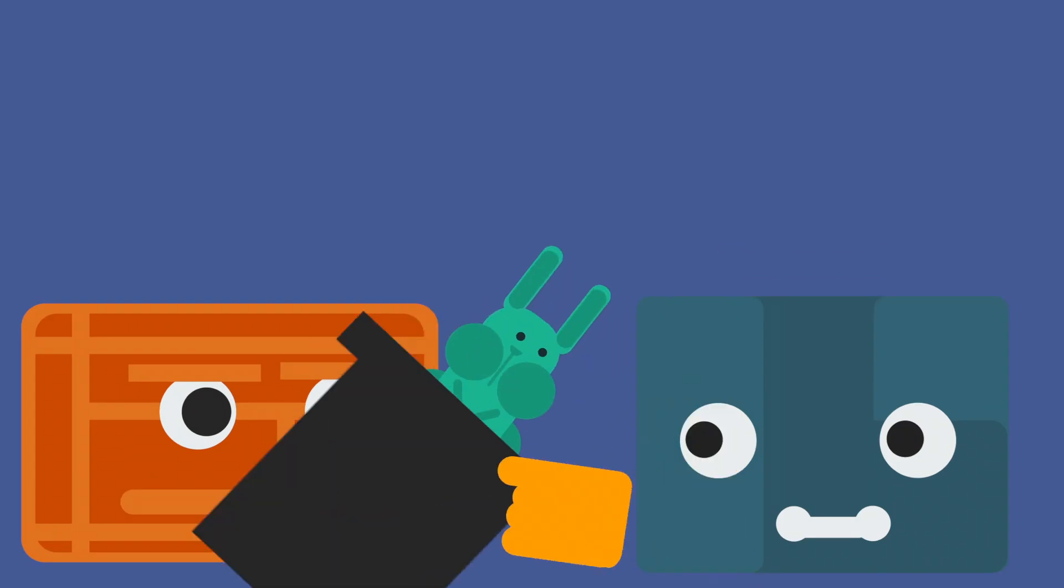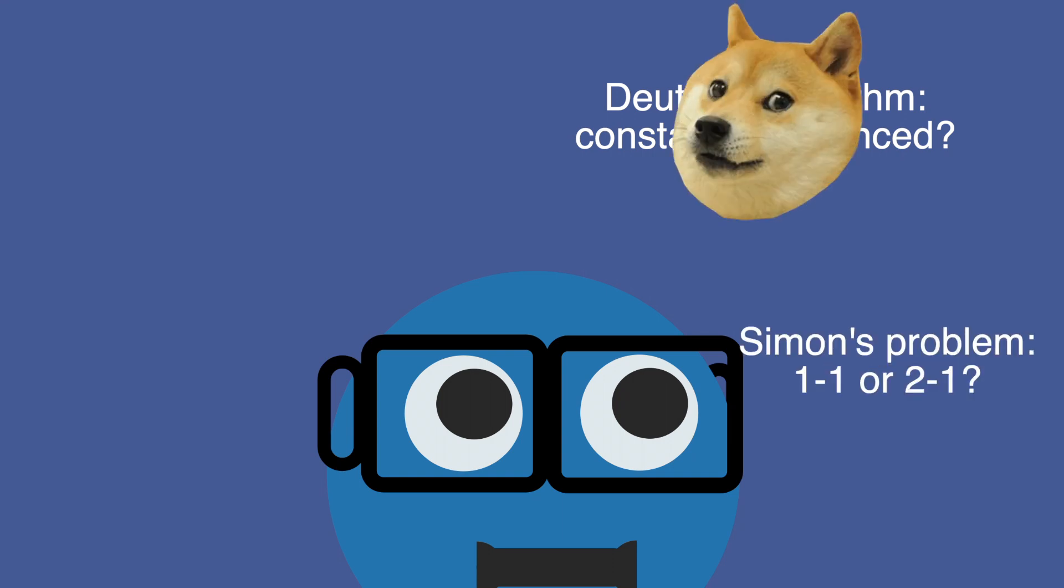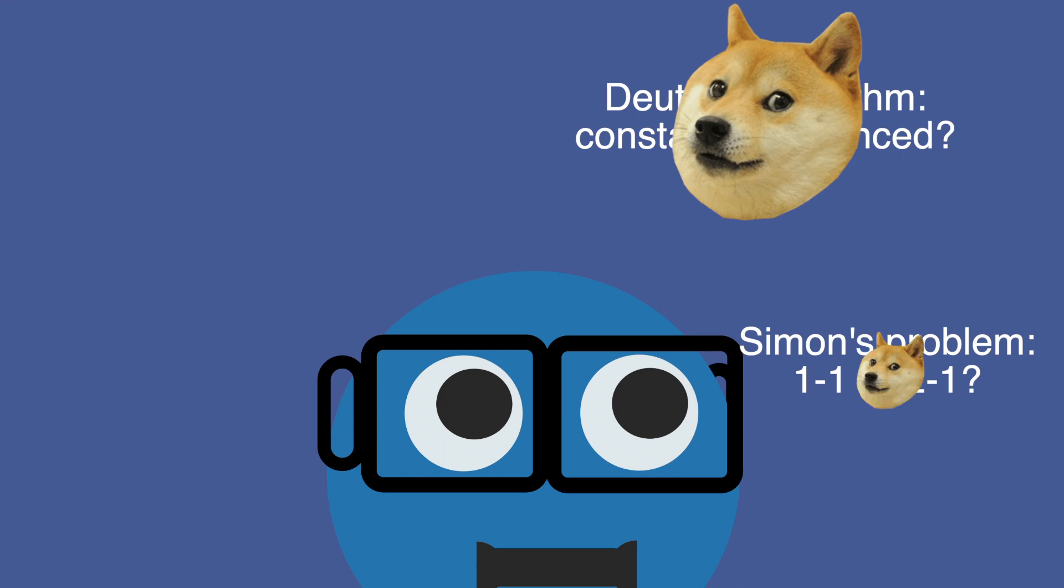In fact, the earliest quantum algorithms from the 1990s were just that, cheap parlor tricks. Do I care about identifying whether or not a function is constant or balanced? Absolutely not. Does the fact that a function is 1-to-1 or 2-to-1 impact me in any way? Not at all.